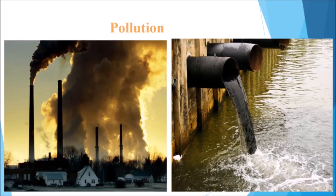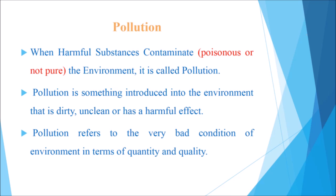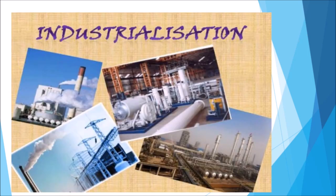Now we are going to learn about pollution. When harmful substances contaminate the environment, it is called pollution. Contaminate here means to make poisonous or impure. In other words, pollution is something introduced into the environment that is dirty, unclean, or has a harmful effect. Pollution refers to the very bad condition of the environment in terms of quantity and quality.